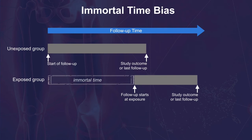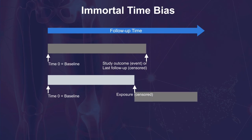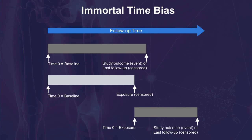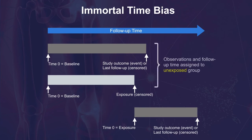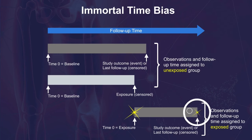In order to make a fair, unbiased comparison, the immortal time period must be properly included. This figure shows the correct assignment of the exposure time. For the group with a time-delayed exposure, the follow-up time must be split between the unexposed and exposed groups. Specifically, follow-up time from study entry to the point of exposure should be assigned to the unexposed group, and only follow-up time from the point of exposure to the study outcome or last follow-up should be assigned to the exposed group.